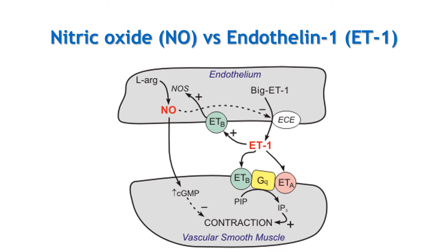Angiotensin-2 is a powerful vasoconstrictor — it increases peripheral vascular resistance and also stimulates aldosterone release, causing salt and water retention and an increase in blood pressure. There are many vasoactive signal molecules, but the major two affecting normal blood pressure are nitric oxide and endothelin-1. Nitric oxide, synthesized in vascular endothelium, is a vasodilator through generating cyclic GMP in vascular smooth muscles. Endothelin-1, also synthesized in vascular endothelium, is a prominent vasoconstrictor acting mainly through its ETA receptors on vascular smooth muscles.